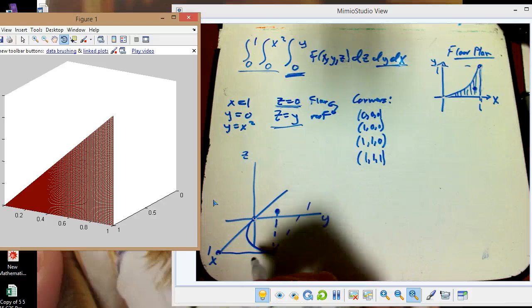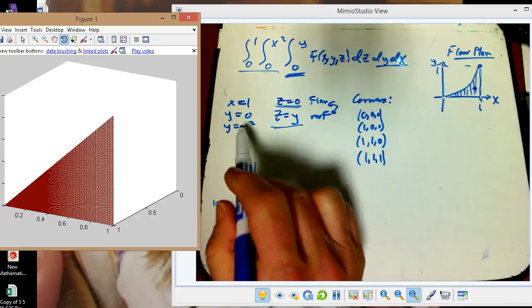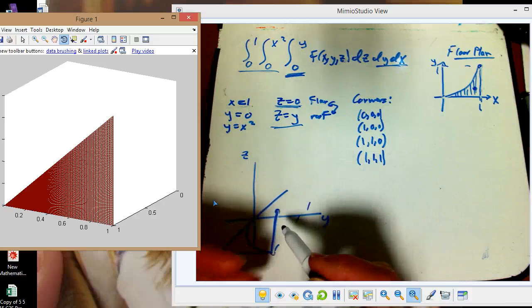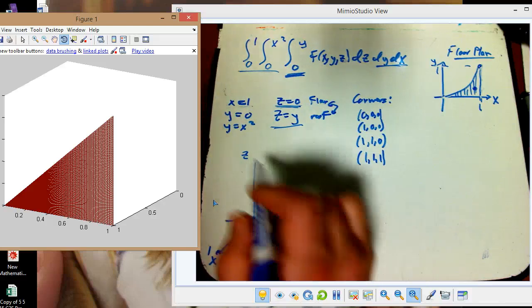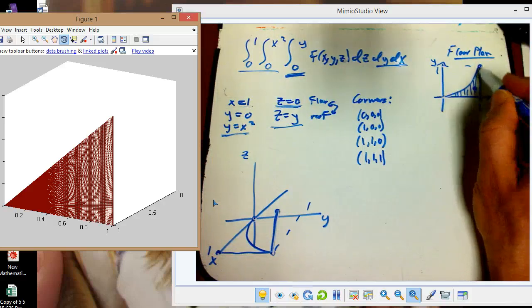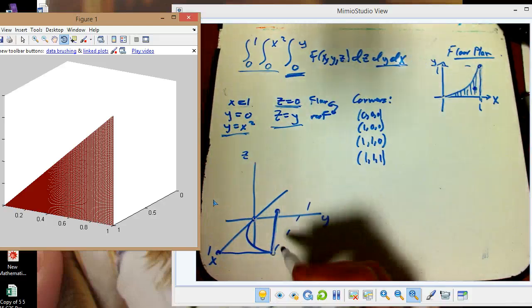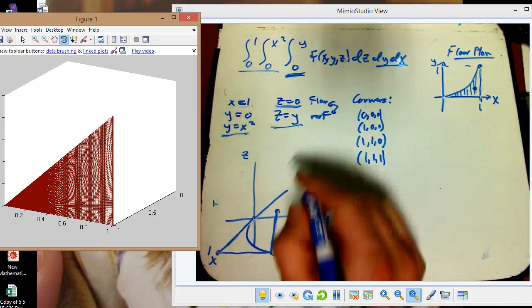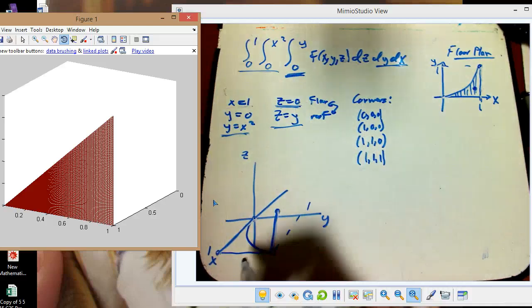And there's going to be an edge going down from there. Because this wall, x equals 1, is going to be a front wall. And that's going to intersect an edge coming from y equals x squared. That's this curve. There's going to be a curving wall above y equals x squared, which is going to be the trickiest part to draw. But that's going to be where they intersect there. There's going to be an edge here where z equals 0 and z equals y intersect.